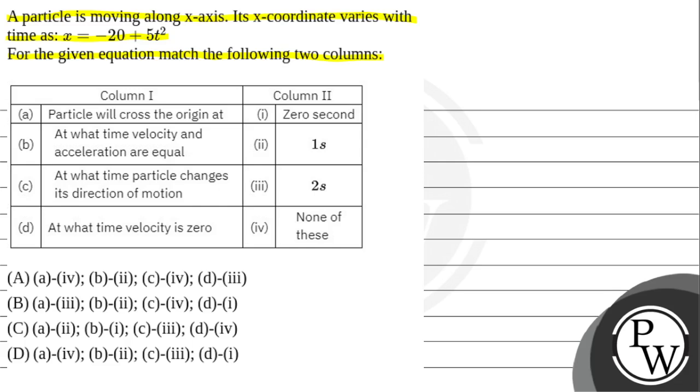Column 2: 1 — 0 seconds; 2 — 1 second; 3 — 2 seconds; 4 — none of these.